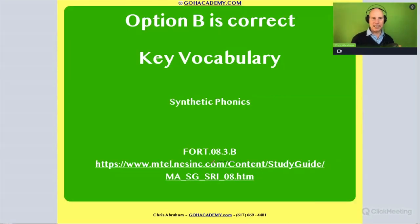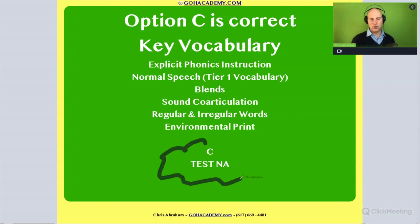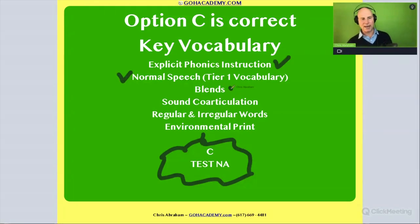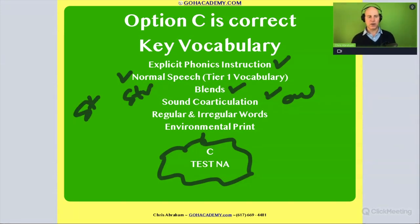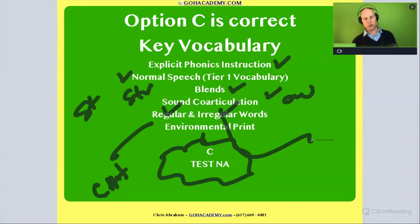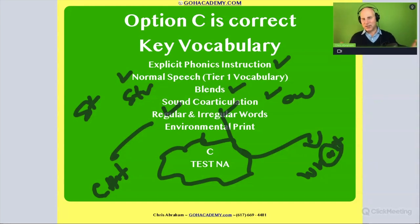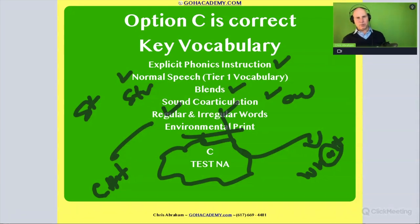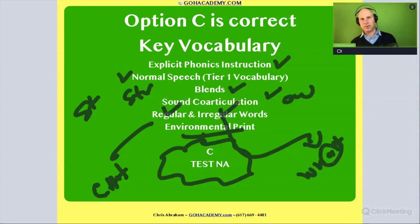The answer is C — a great question, good practice. Key ideas here: normal speech or everyday words, tier-one vocabulary, blends and co-articulated sounds like 'ow,' consonant clusters like 'str,' and blends like 'st' that might be tricky to hear. Also: regular words like 'cat' that we can decode, irregular words like 'what' where the vowel is neither short nor long, and environmental print — the print we see around us every day that students have exposure to even before they can decode.